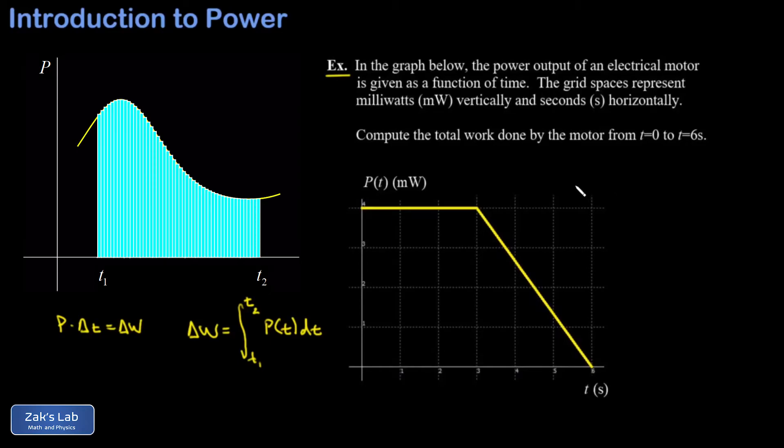In the problem we're told that the grid spaces represent milliwatts vertically—those are thousandths of watts, but we can just work with the prefix milli throughout. The grid spaces represent seconds horizontally. We're asked to compute the total work done by this electrical motor from t equals 0 to t equals 6 seconds, so we're just looking for the area bounded by this curve.